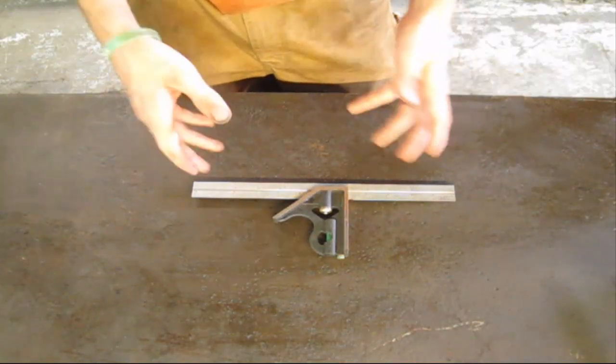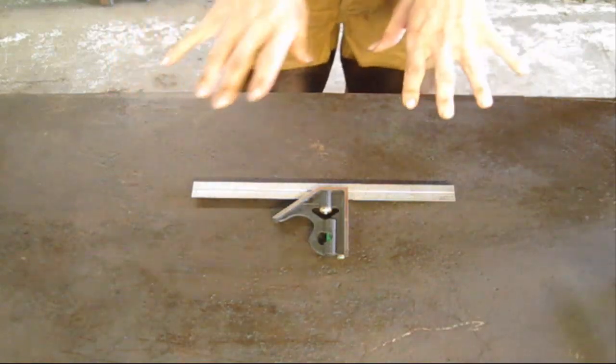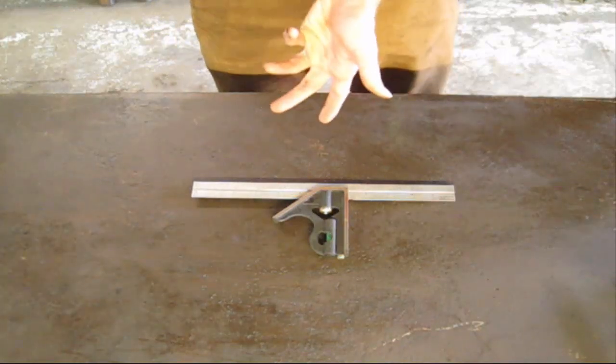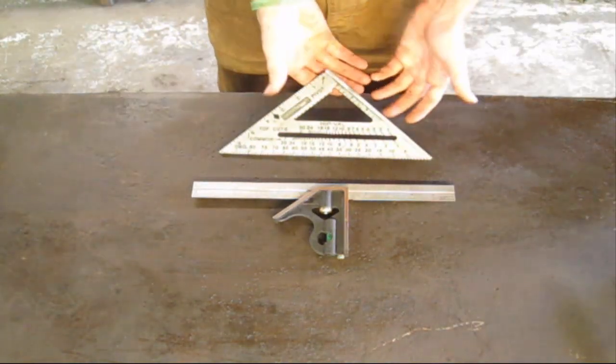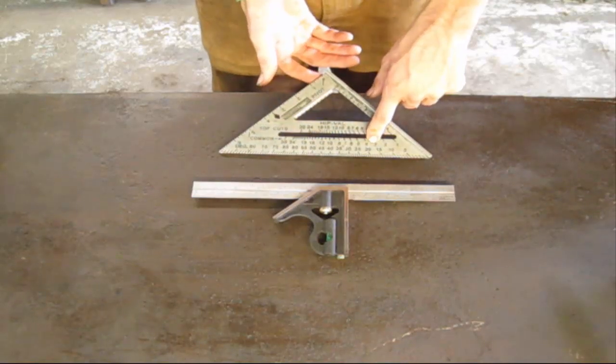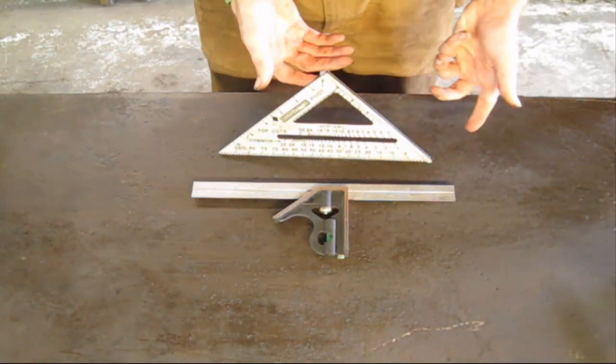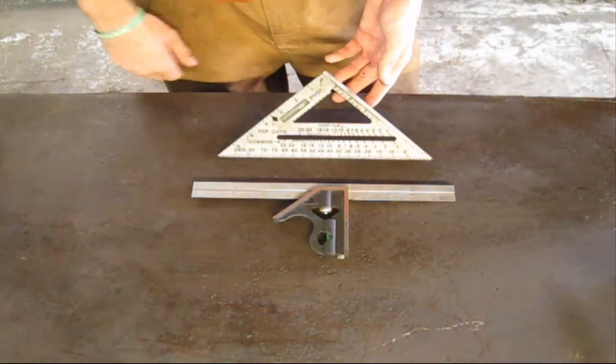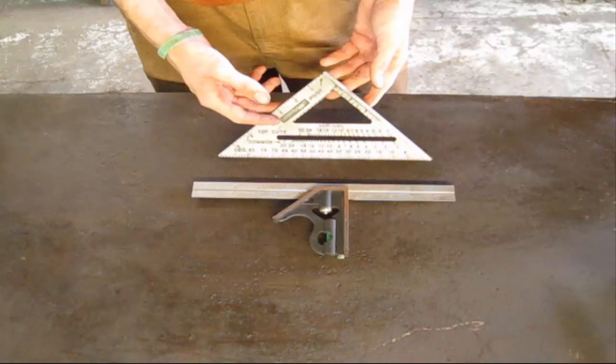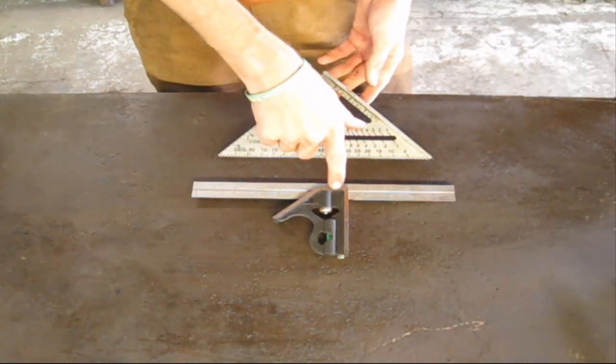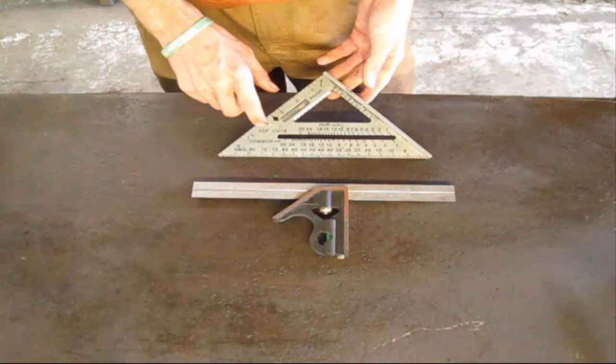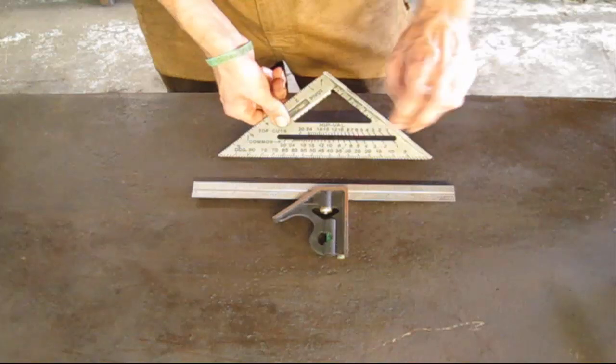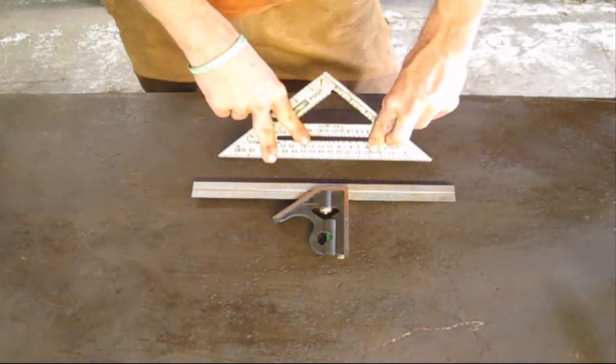If y'all are fans of the show, you know that I love the speed square. This right here is a very utilitarian design of function and speed, hence the name. So what is the main difference between these two tools? Because the speed square was actually kind of an offshoot from the combination square. The speed square is primarily used for wood.